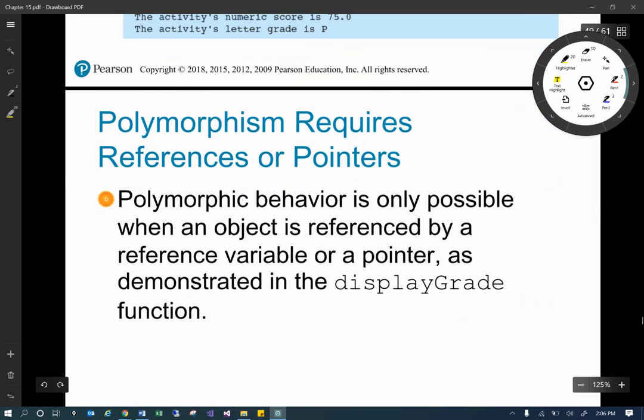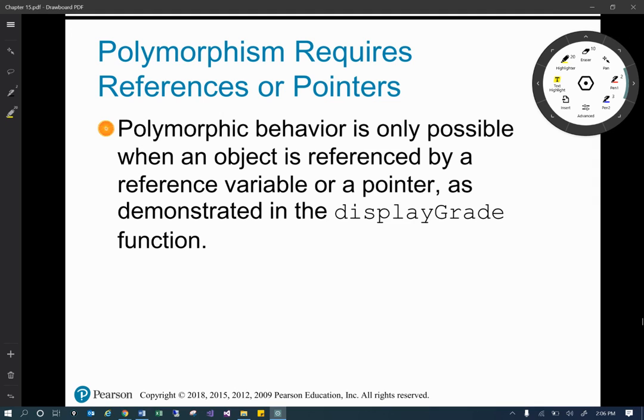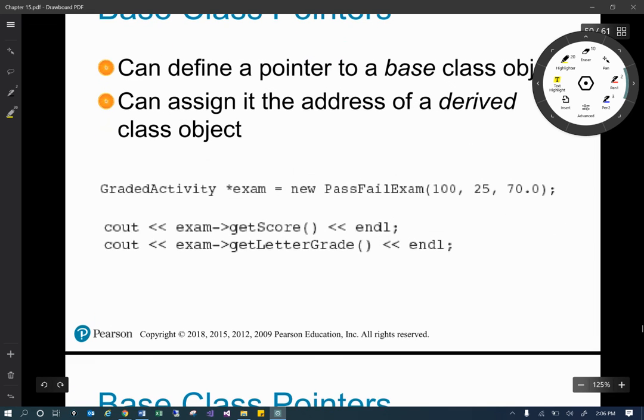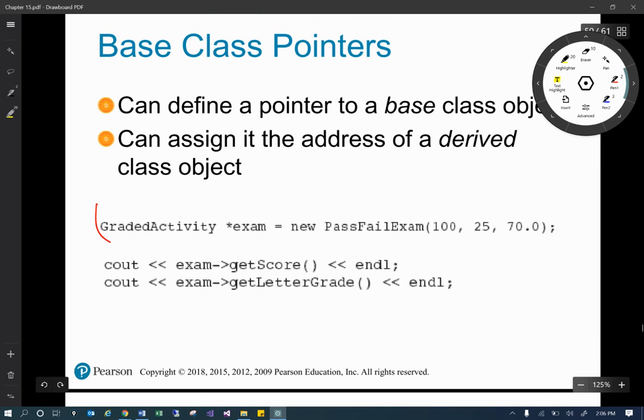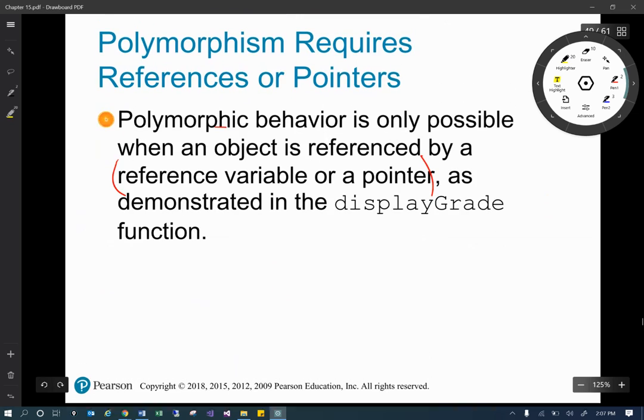So 15-12 demonstrates polymorphism by passing objects of graded activity and pass fail using the virtuals. So here's that class. I'll let you take a look at it, and it goes through everything that we just talked about. So that polymorphic behavior is only possible, by the way, when you are using references and pointers. So make sure that you're doing that. Let's see if we can get another example of that. This is where we're dynamically allocating memory by using the new keyword. And now because we're using pointers, it's going to be polymorphism.